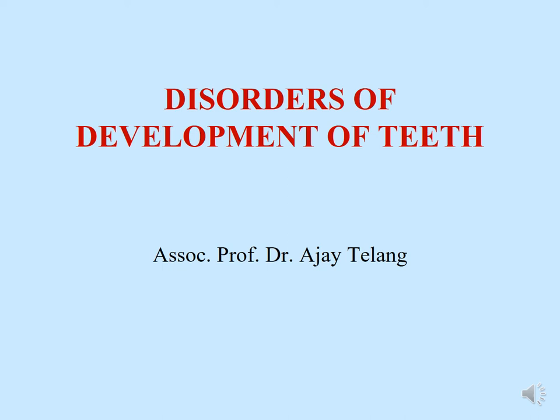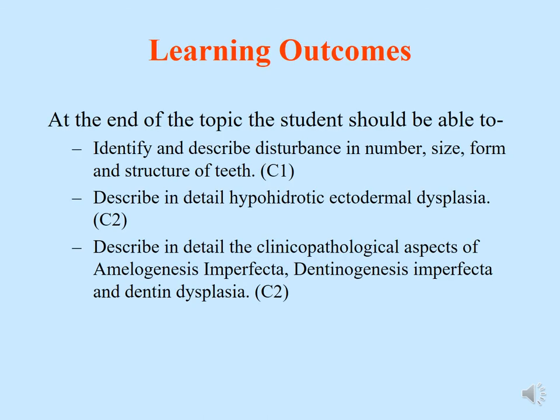Hello everyone and welcome to this new topic on disorders of development of teeth. The learning outcomes for this topic are: identify and describe disturbances in number, size, form and structure of teeth; describe in detail hypohidrotic ectodermal dysplasia; and describe in detail clinical pathological aspects of amelogenesis imperfecta, dentinogenesis imperfecta and dentine dysplasia.